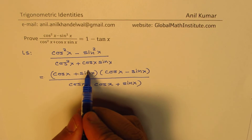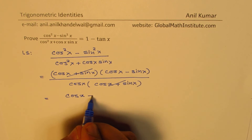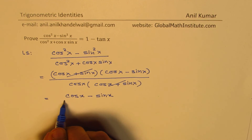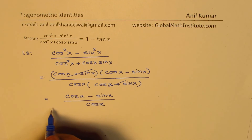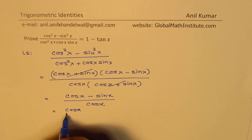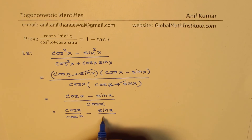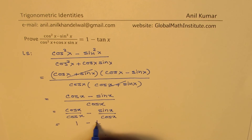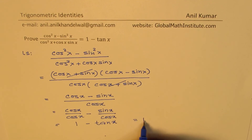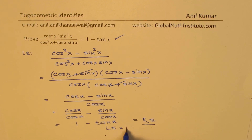In the denominator we can factor cos x, giving cos x times cos x plus sin x. Now cos x plus sin x cancels, leaving cos x minus sin x over cos x. Dividing each term by cos x gives cos x over cos x minus sin x over cos x, which equals 1 minus tan x — the right side. So we have shown that the left side equals the right side, and therefore this identity is proven.